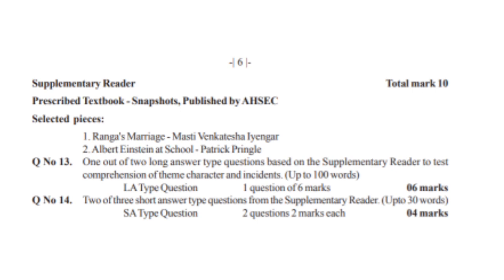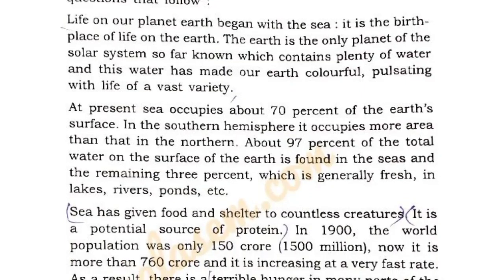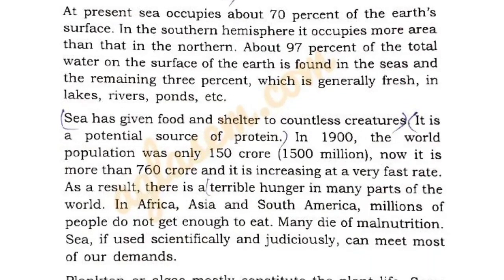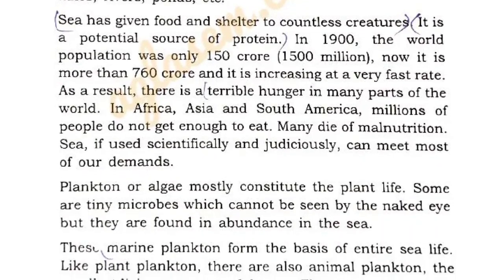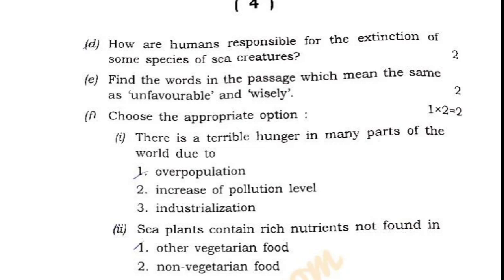Now I will give you the first sample question. The question is: why is our Earth more colorful and full of life than other planets of the solar system? The two uses of the sea, and there is an unbroken chain of life in the sea. These are 2 marks MCQ type questions.